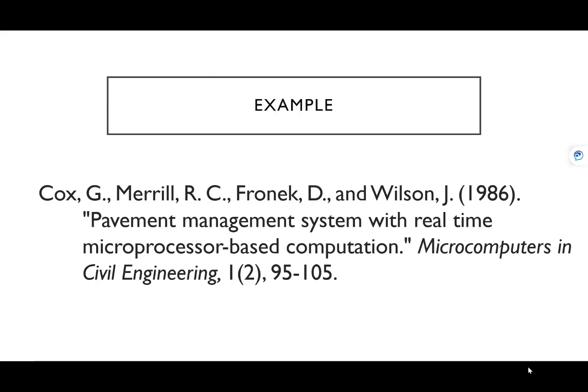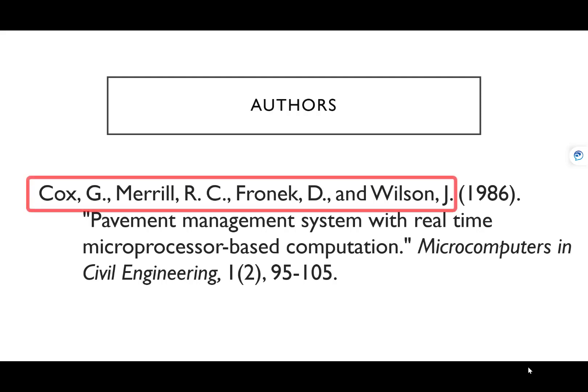This is an example of a complete journal article citation in ASCE format. Let's dissect this and go through each part of the citation. The first part is the authors. In ASCE format you list all of the contributing authors. Their names are written with surname first, followed by a comma, and then their initial with a period at the end.